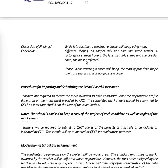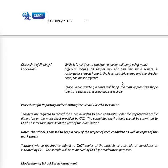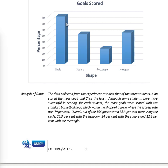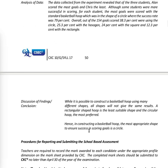Discussion, findings, and conclusion: while it is possible to construct a basketball hoop using many different shapes, all shapes will not give the same results. A rectangular-shaped hoop is the least suitable shape and a circular hoop the most preferred. In conclusion, when constructing a basketball hoop, the most appropriate shape to ensure success in scoring goals is a circle.